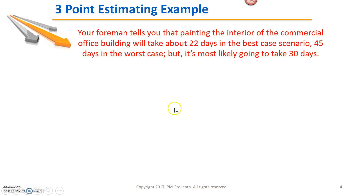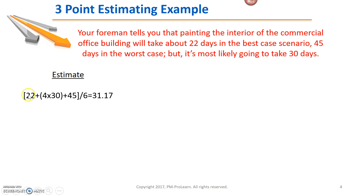Let's look at an example. Let's say I'm building a commercial office building, and my foreman tells me painting the interior will take about 22 days in the best case scenario, 45 days in the worst case, but most likely 30 days. So let's plug those numbers in: optimistic of 22 plus four times the realistic of 30, plus 45 for the pessimistic, divided by six. My three-point weighted average is 31.17 days.